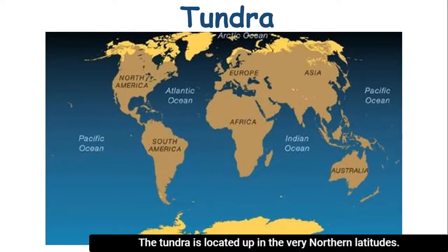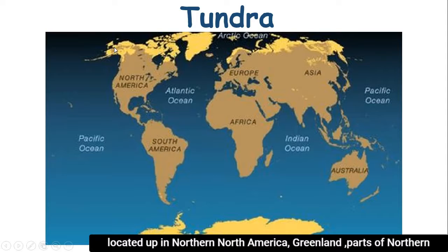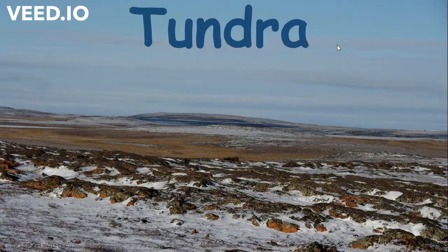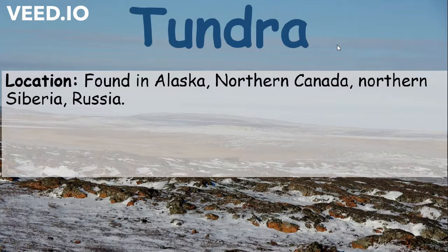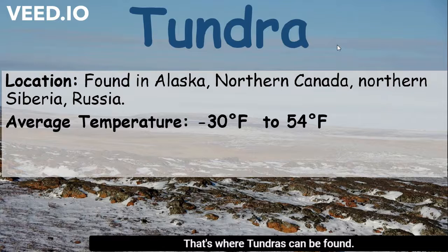The tundra is located up in the very northern latitudes. You can see there's a very northern band of tundras located up in northern North America, Greenland, parts of northern Europe, and also Asia. That's where tundras can be found.